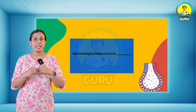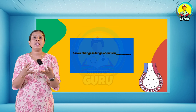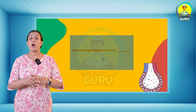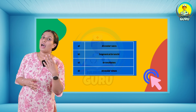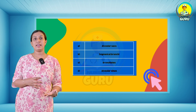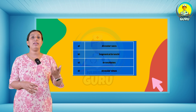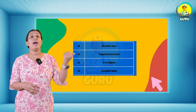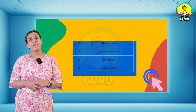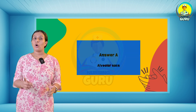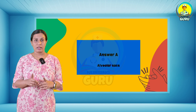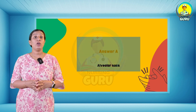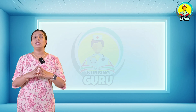Sixteenth question: gas exchange in the lungs occurs in what? Options are alveolar sac, segmental bronchi, bronchioles, and alveolar sinus. The first option, alveolar sac, is the right answer. I hope it is clear for everyone — don't forget to write it in your notes.